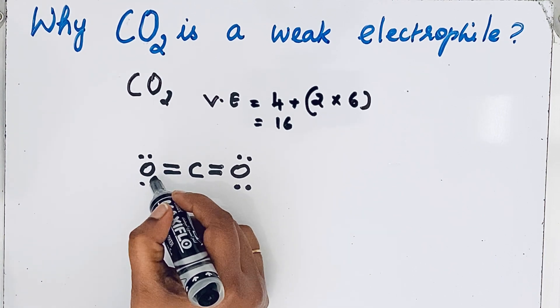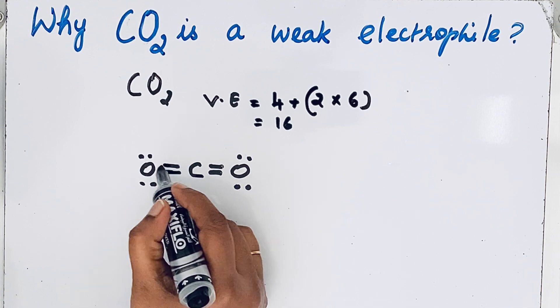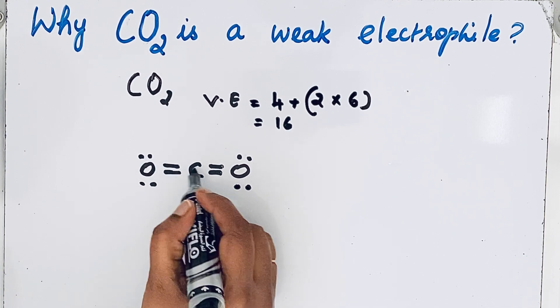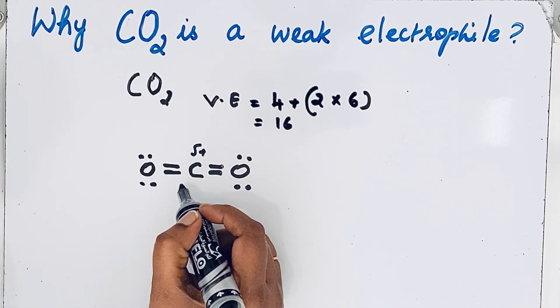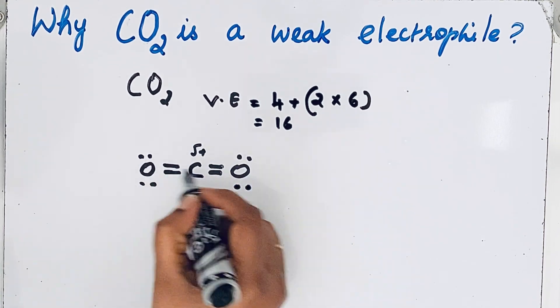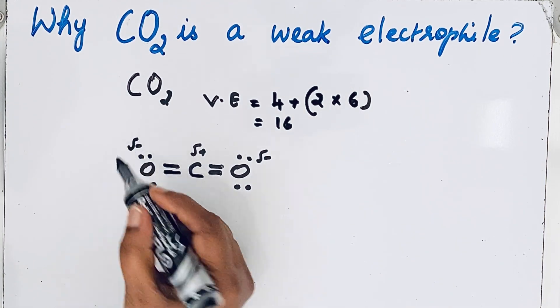Here, oxygen is highly electronegative, so this oxygen pulls the electrons towards it and creates a partial positive charge on the carbon atom. That means both oxygen atoms are getting partial negative charge.